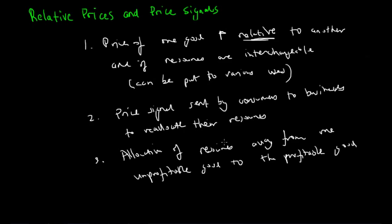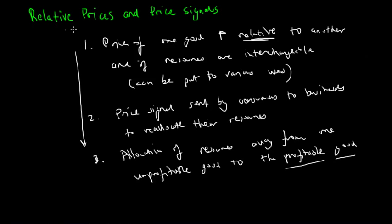Because demand determines how much we value a certain good or service, when demand for a good increases, and because an increase in demand results in an increase in price, producers maximize profits by allocating their resources to that productive use. These three steps reflect how changes in relative prices can send price signals to producers so that they allocate their resources to the most efficient or productive use.